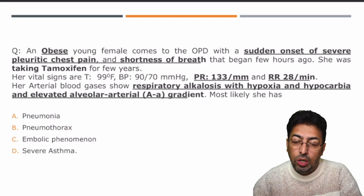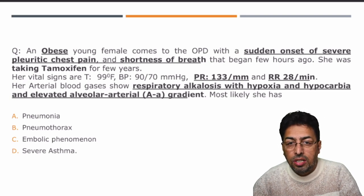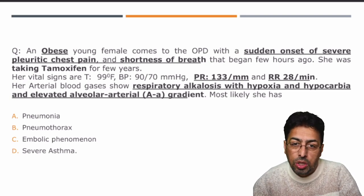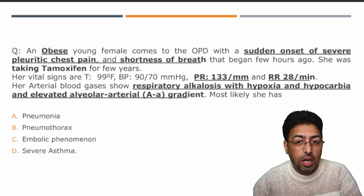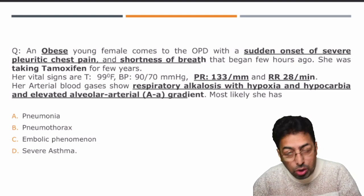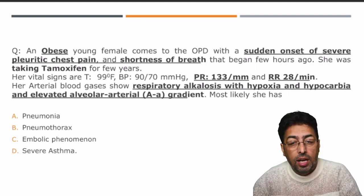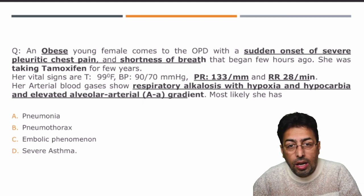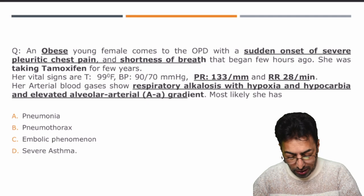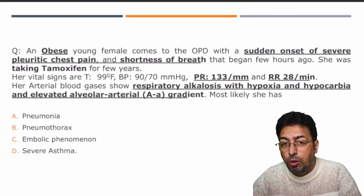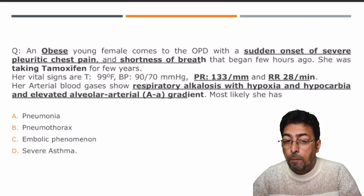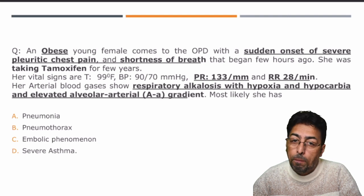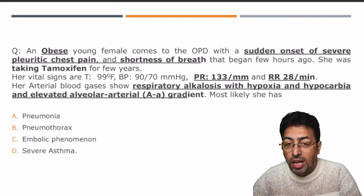Then we arrive at option D — leaving option C for the time being. Severe asthma most likely has an associated allergic pattern with history of exposure to certain allergens, a chronic history, or a clinical scenario like status asthmaticus in which a patient might present with shortness of breath and silent chest in severe cases, but there will be a positive significant history. These things don't match. Now coming to option C — embolic phenomena. Many students get carried away thinking this cannot be the answer, but the most likely answer as per the history and lab values is an embolic phenomena.